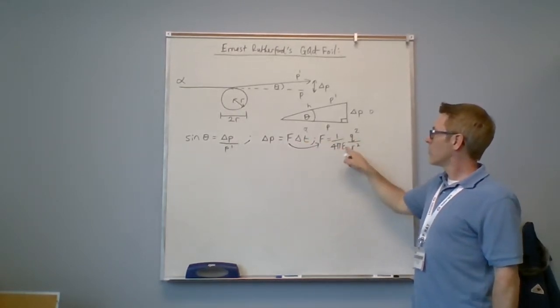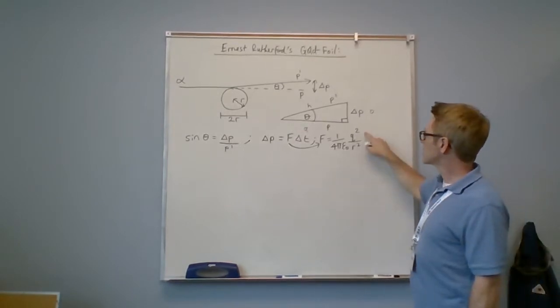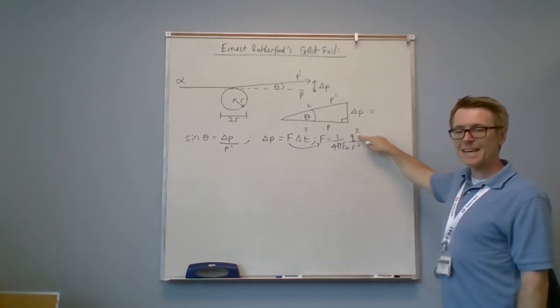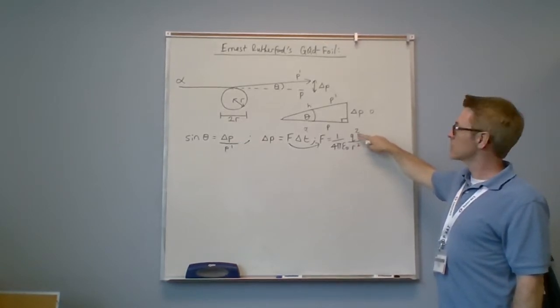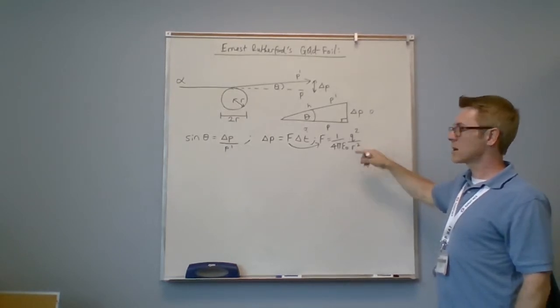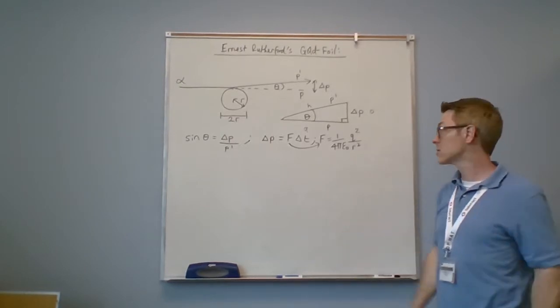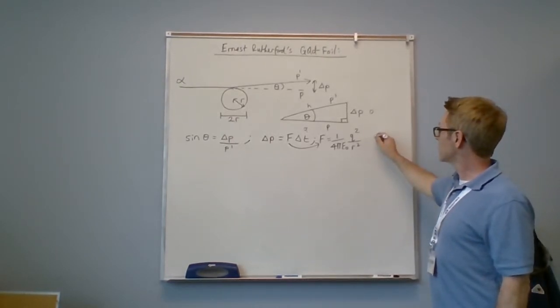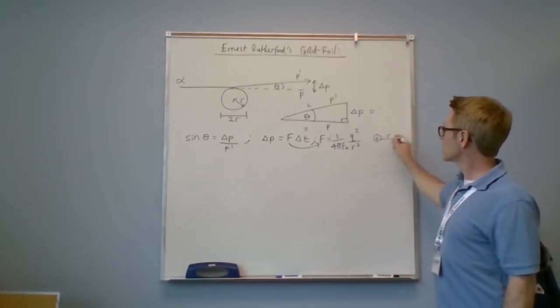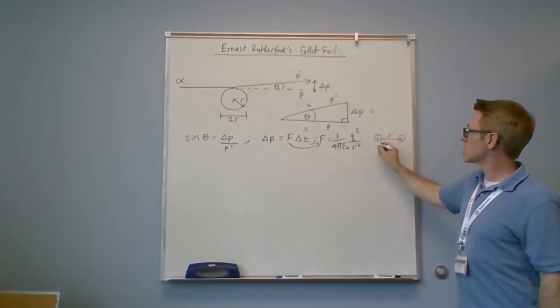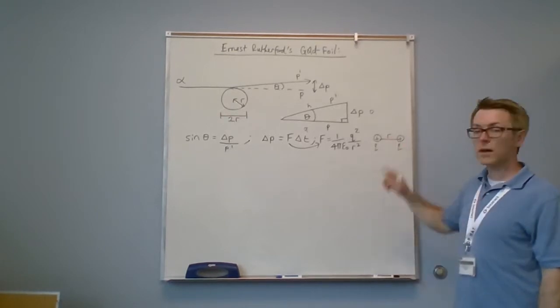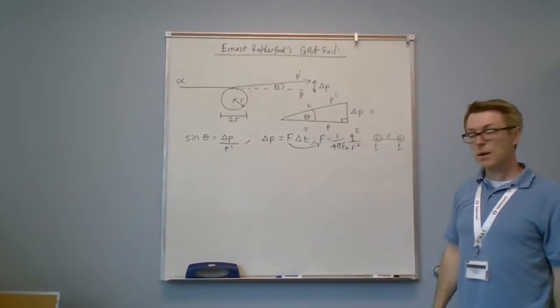One over four pi epsilon zero is just a constant. In previous videos, we've written the charge as E. In general, the charge is written as Q. So Q squared is charge squared. R squared is the separation between two objects that have a charge. For example, if you had two objects separated by r, and this had a charge and this had a charge, then you'd have two charges, q and q, Q squared separated by the reciprocal squared separation r.